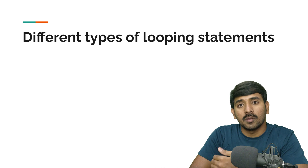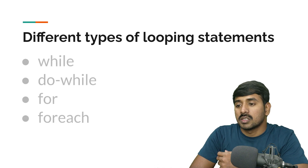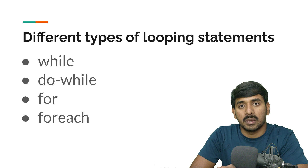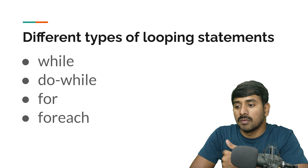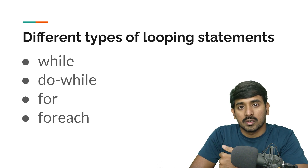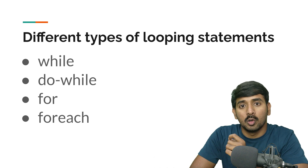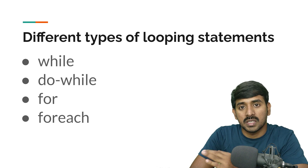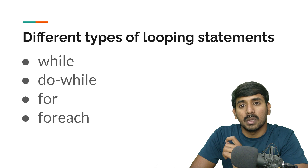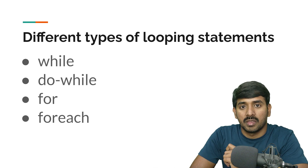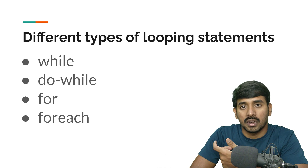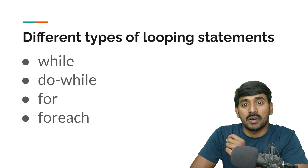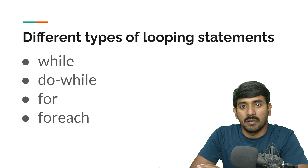So we have different types of looping statements — there are 4 types: while, do-while, for, and for-each. For-each is also called extended for loop. So if you are reading any article, website, or YouTube tutorial, you may see it called extended for loop — that is the for-each loop.